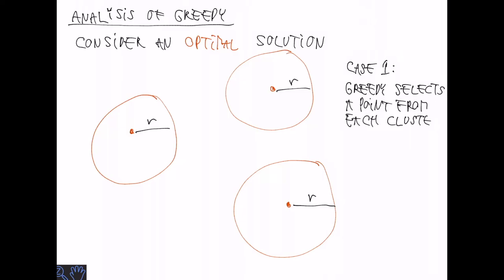First of all, if greedy selects a point from each cluster, I claim that we are done. Why is that?